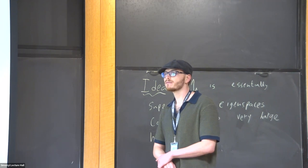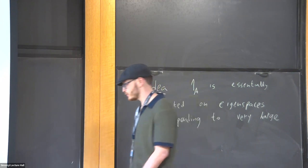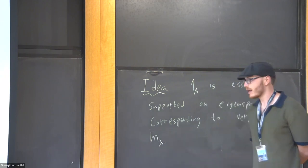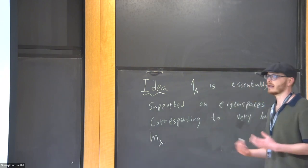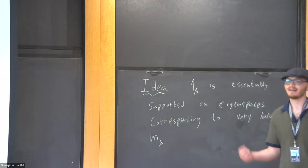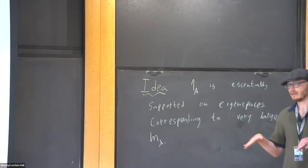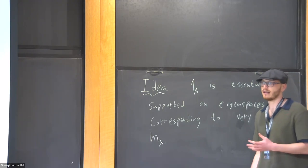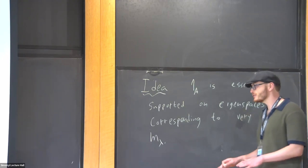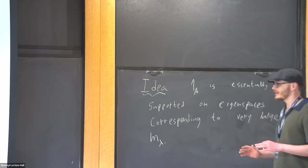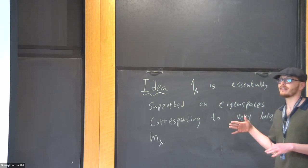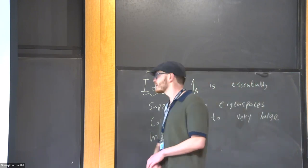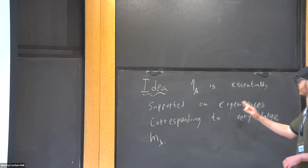There are some groups with a good spectral gap, and when the rank is high the multiplicity is not as large. Hypercontractivity — which we'll talk about — shows you that you're actually supported on the large dimensions. So the idea is to show 1_A is essentially supported on the large dimensions, not just using the smallest dimension as Gowers does.